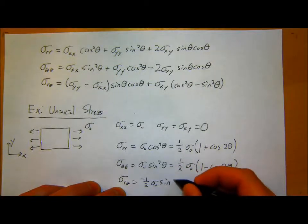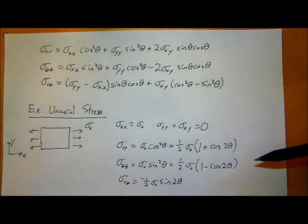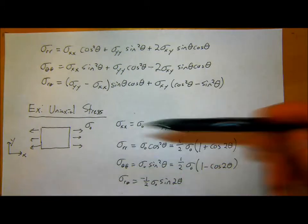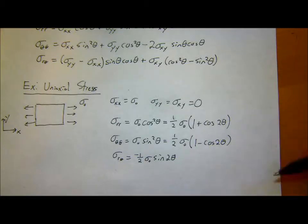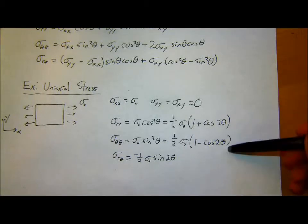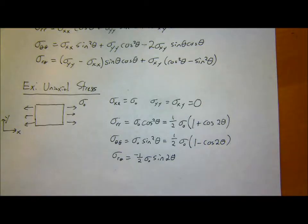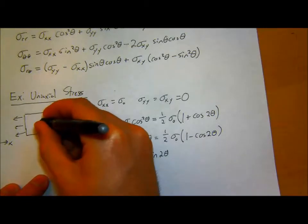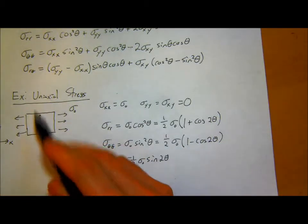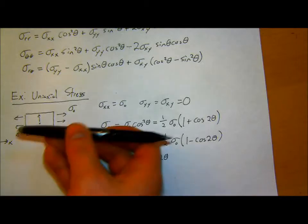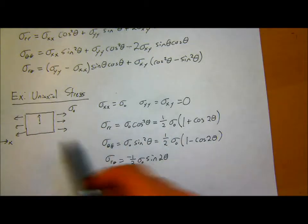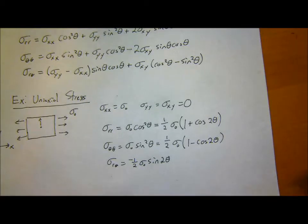Even for a simple stress state like this, the polar coordinate equations are a little non-intuitive. But basically, for that 2-theta term — if I go 0 or 180 degrees, I'm getting the same stress. When theta is 90 degrees, sigma-rr is zero because there's no stress in the vertical direction. These expressions are a useful starting point for talking about a hole in a plate.